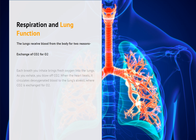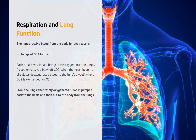The lungs receive blood from the body for the exchange of carbon dioxide for oxygen. Each breath you inhale brings fresh oxygen into the lungs. As you exhale, you blow off carbon dioxide. When the heart beats, it circulates deoxygenated blood to the lungs' alveoli, where carbon dioxide is exchanged for oxygen. From the lungs, the freshly oxygenated blood is pumped back to the heart, and then out to the body.